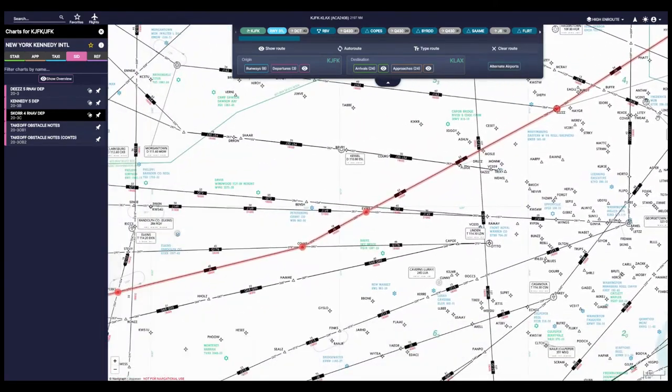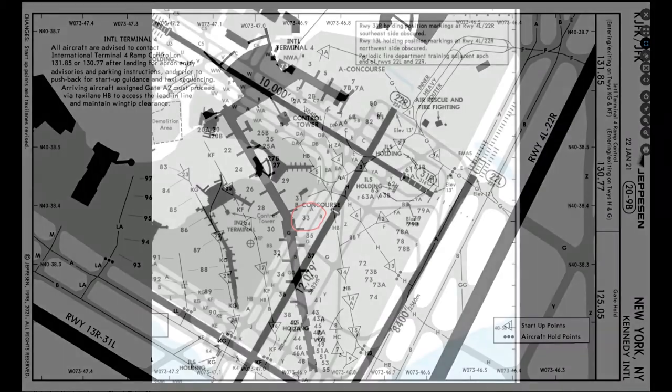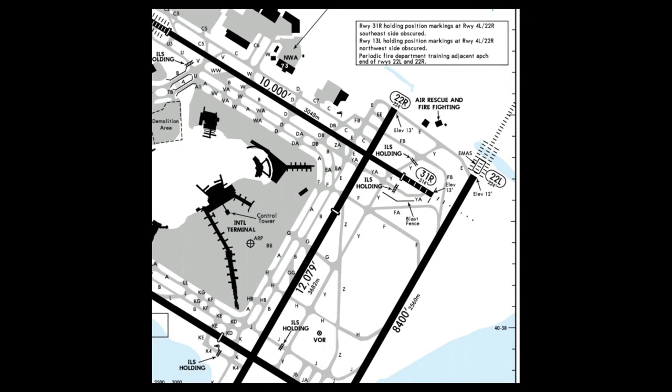When you're ready for push and start, tune ground's frequency — or tower/center if ground isn't available, per the top-down approach. Pretending ground is available, we call up: 'Ground, Air Canada 248, ready push and start.' They come back: 'Air Canada 248, push and start approved, tail facing south, advise ready taxi.' You reply: 'Tail facing south, advise ready taxi, Air Canada 248.' That means push back with your tail to the south — setting you up for taxi to runway 31 Right.